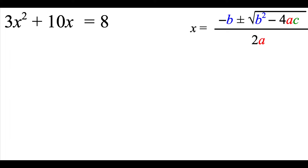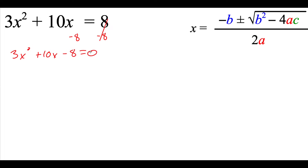When we're using the quadratic formula, we always need to make sure that our equation is equal to zero before we start picking out our a, b, and c values. So we're going to need to take that 8 that's on the right hand side and move it over to the left hand side. Since it's a positive 8, we're going to have to subtract 8 on both sides. So we'll get 3x squared plus 10x minus 8 equals zero.